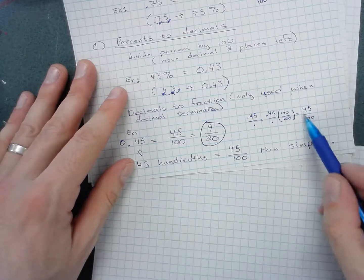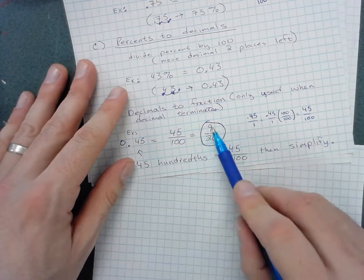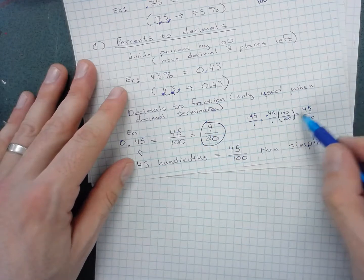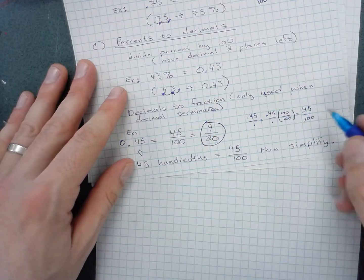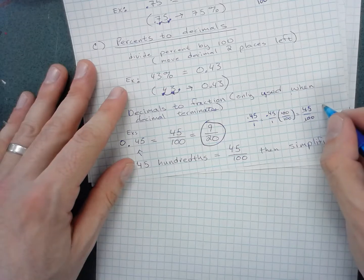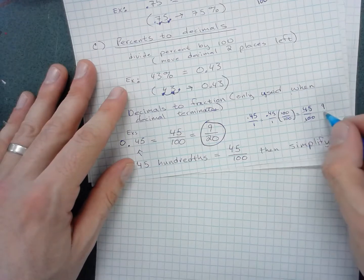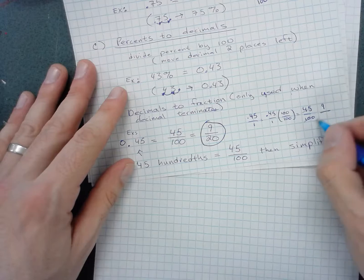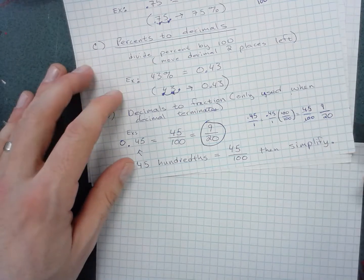Then you can simplify your fraction by dividing out common factors. 45 and 100 are both divisible by 5. 45 divided by 5 is 9, and 100 divided by 5 is 20, giving 9/20.